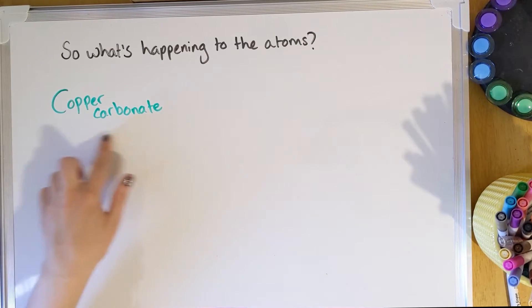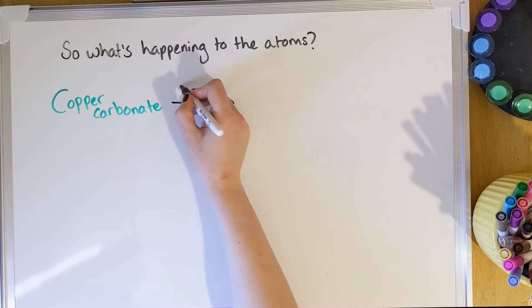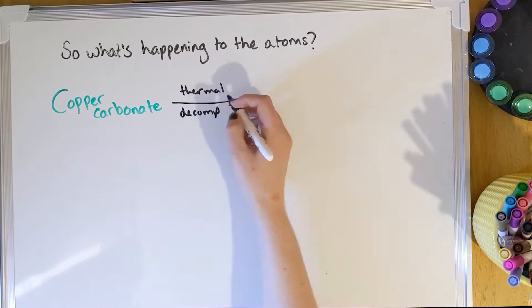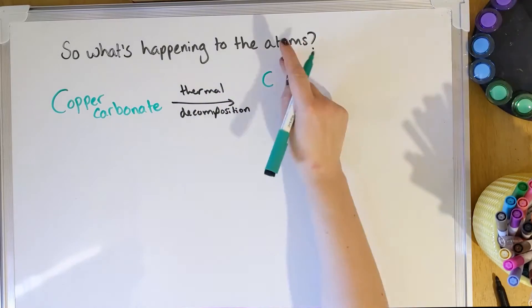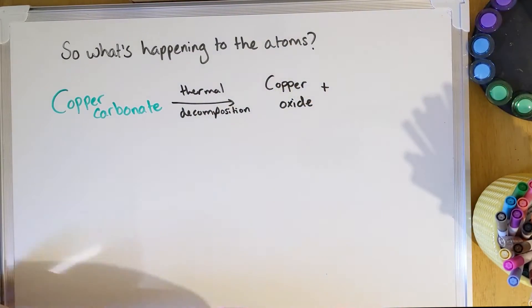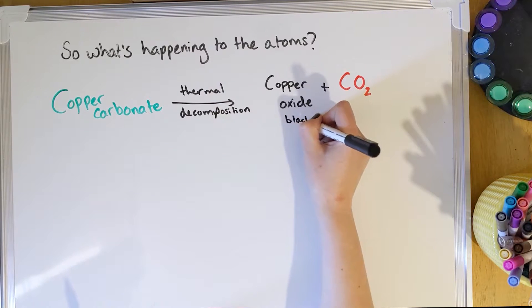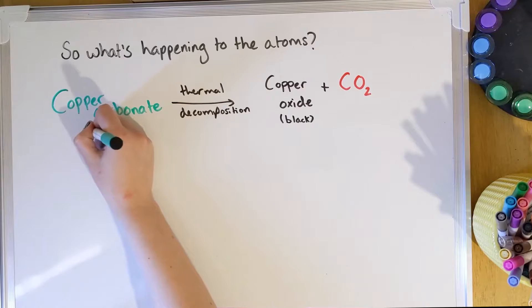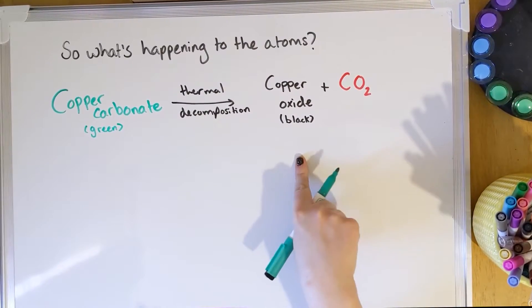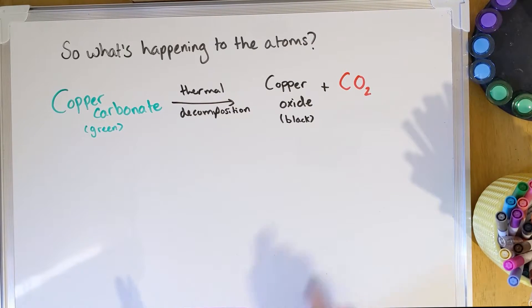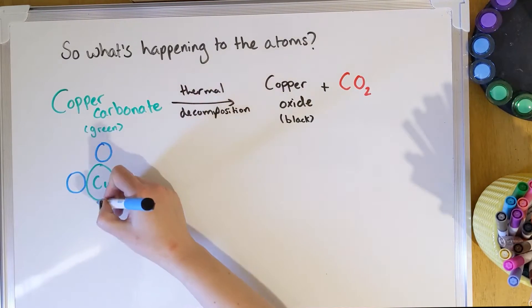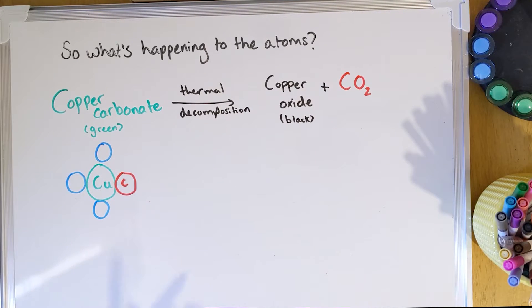Copper carbonate, quite luckily, is the same sort of bluey-green color of this pen. And what happens is when this is decomposed through thermal decomposition, you form your metal oxide copper oxide and CO2. Kept it black because copper oxide is actually black. Now the copper carbonate is this green, so this is immediately a sign that this is a chemical reaction because we've had a color change and we've got a new product that's formed.